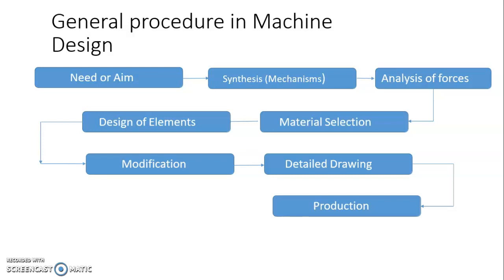Once all modifications are done, the next step is preparation of detailed drawings using available software such as AutoCAD or 3D modeling software. The detailed drawing output or printout is supplied to the production department, where workers and manufacturing personnel observe it and perform the production activities.